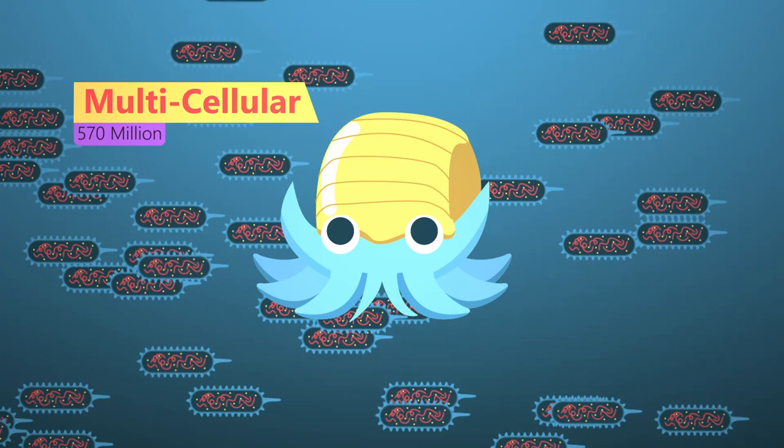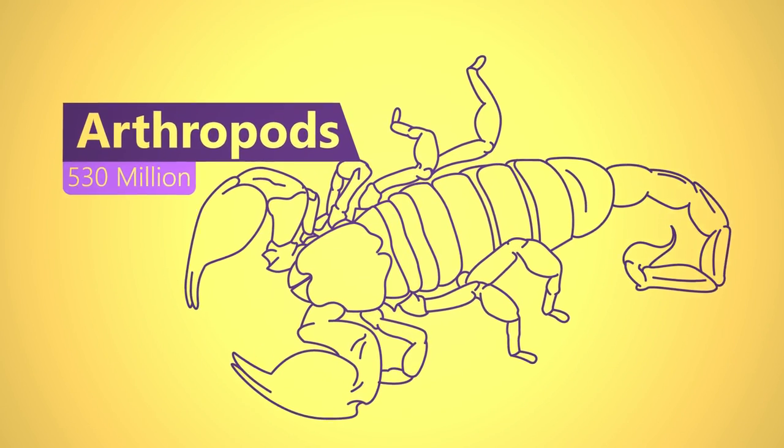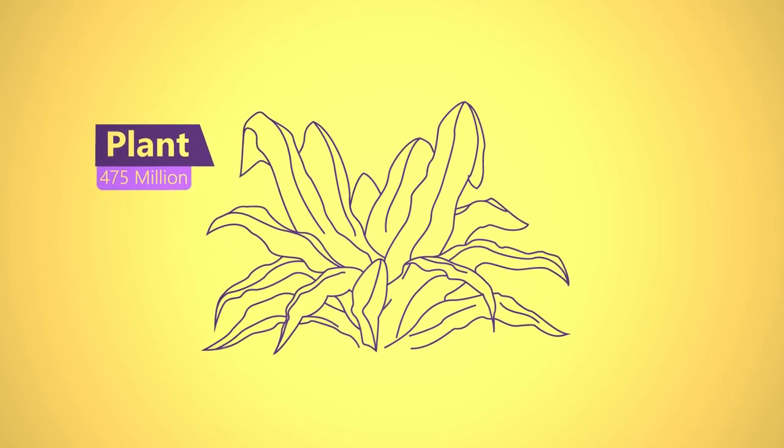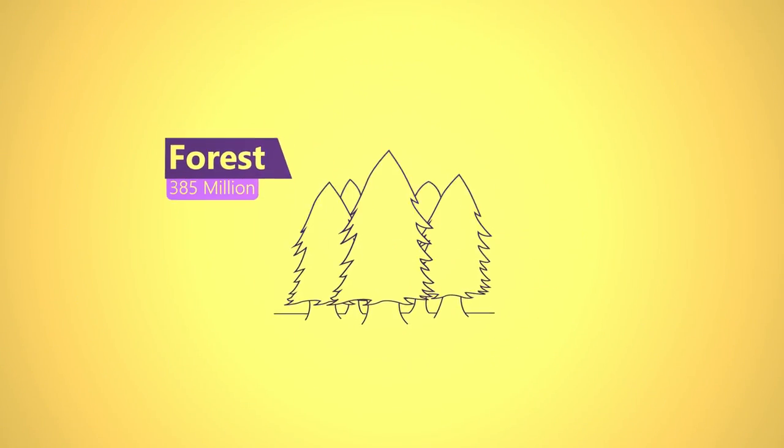Much of what we know about evolution comes from the fossil record. Arthropods came first, followed by fish about 530 million years ago, then land plants 475 million years ago and forests 385 million years ago.